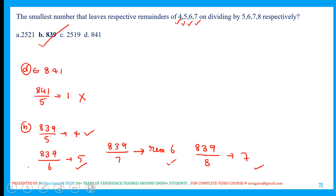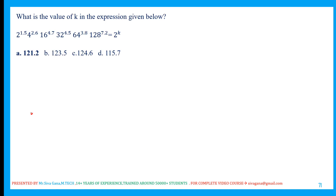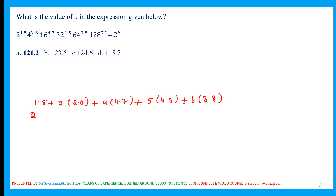Next question: find the value of k in the given expression. 2 to the power 1.5 plus 4 is 2 squared; 2 into 2.6 equals 16, which is 2 to the power 4; 4 into 4.7 plus 2 equals 32, which is 2 to the power 5; 5 into 4.5 gives 64, which is 2 to the power 6; 16 to 3.8 gives 128, which is 2 to the power 7; 7 into 7.2. Using the on-screen calculator, the total power comes to 121.2, which equals 2 to the power k, so k is 121.2.